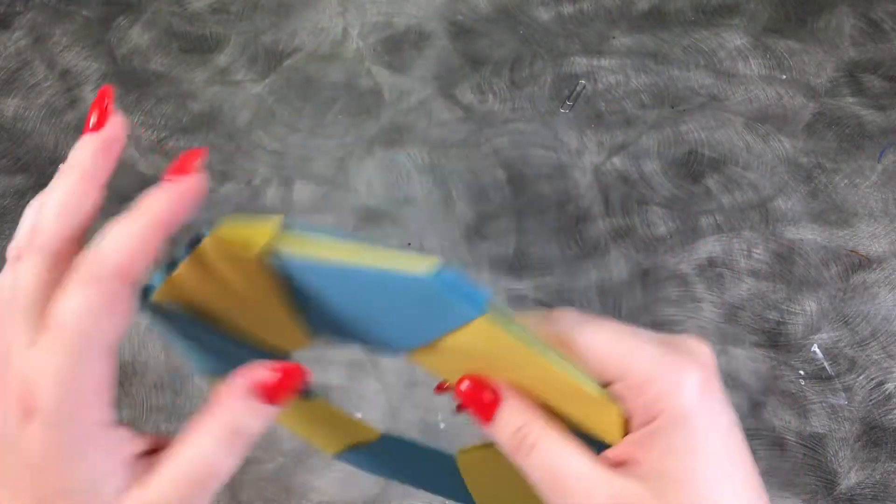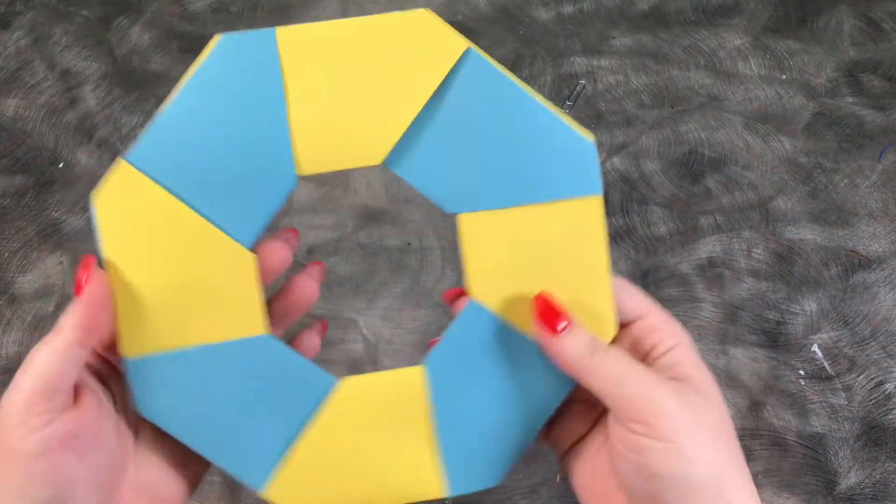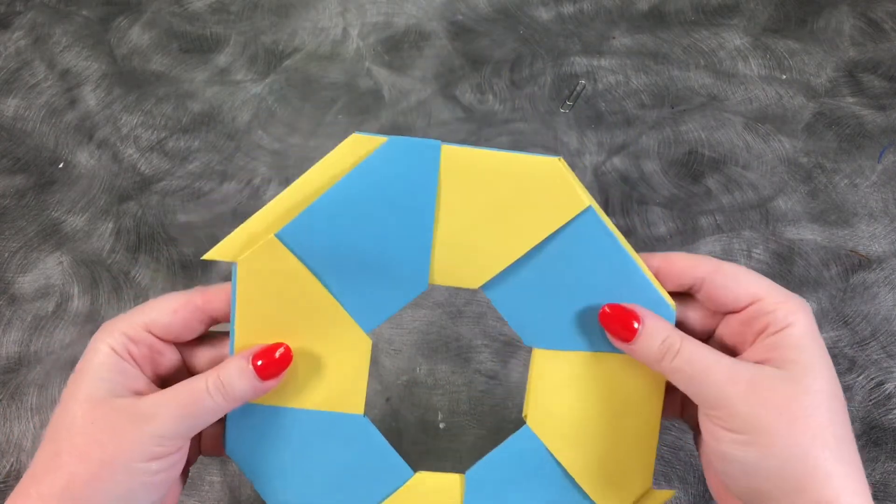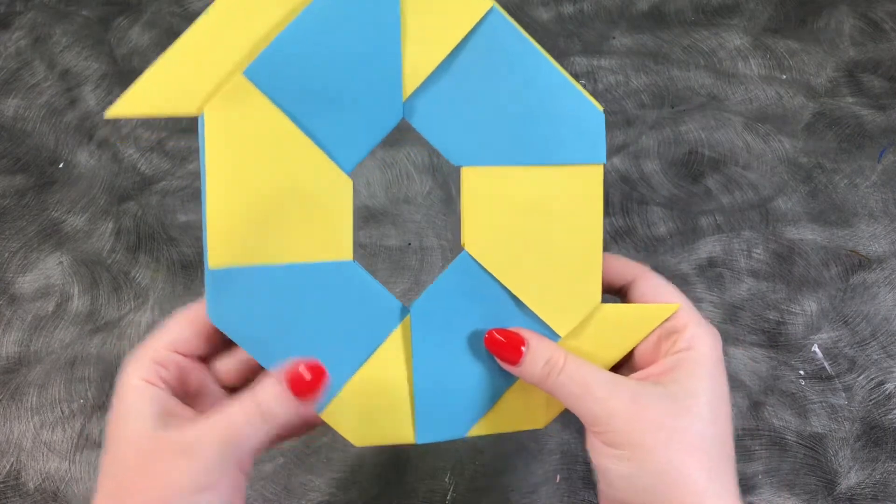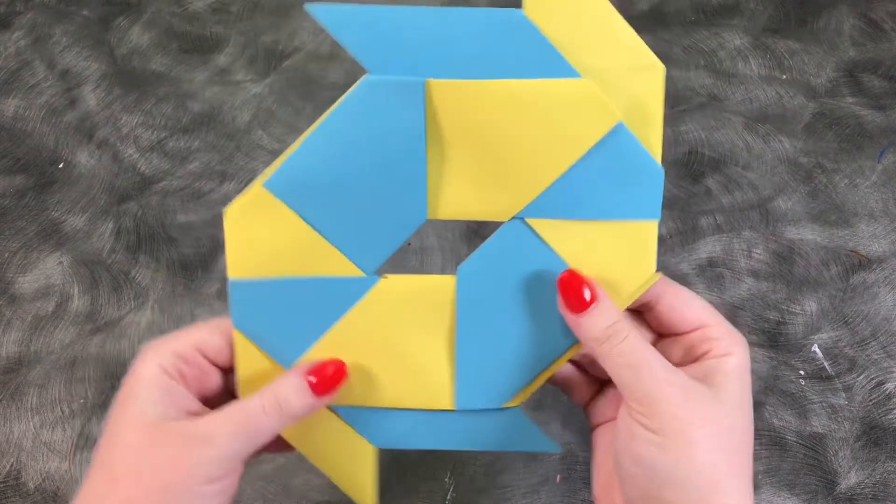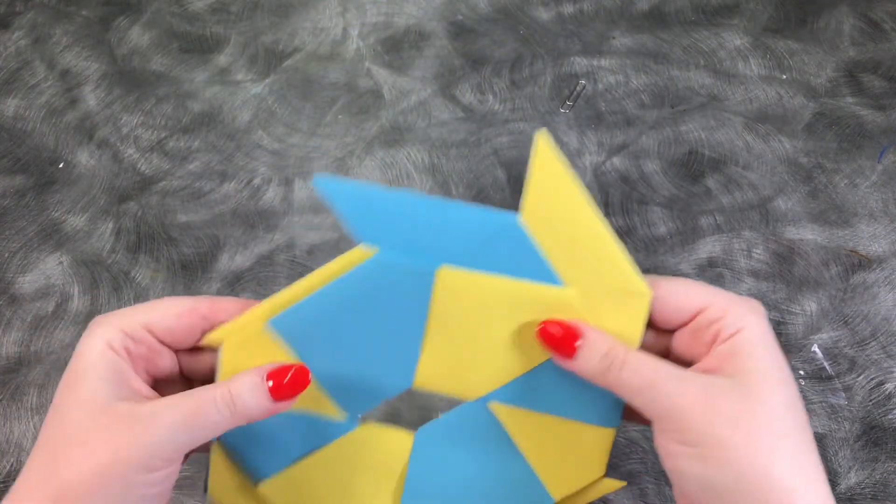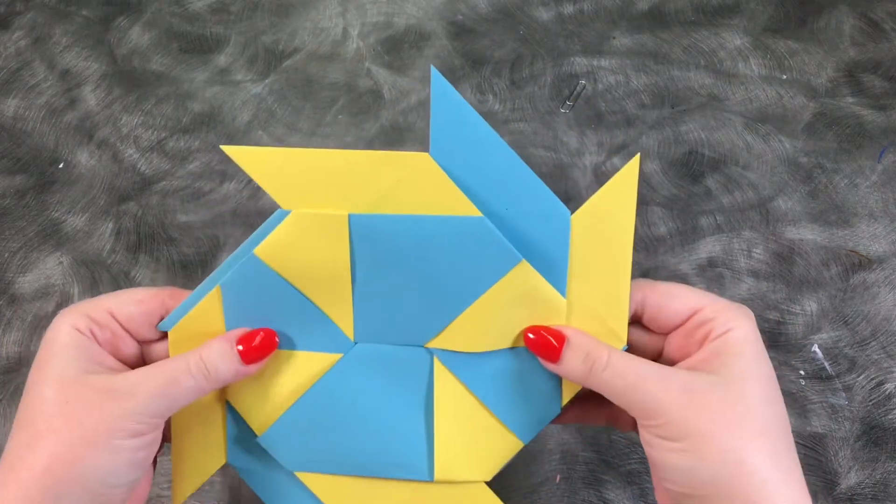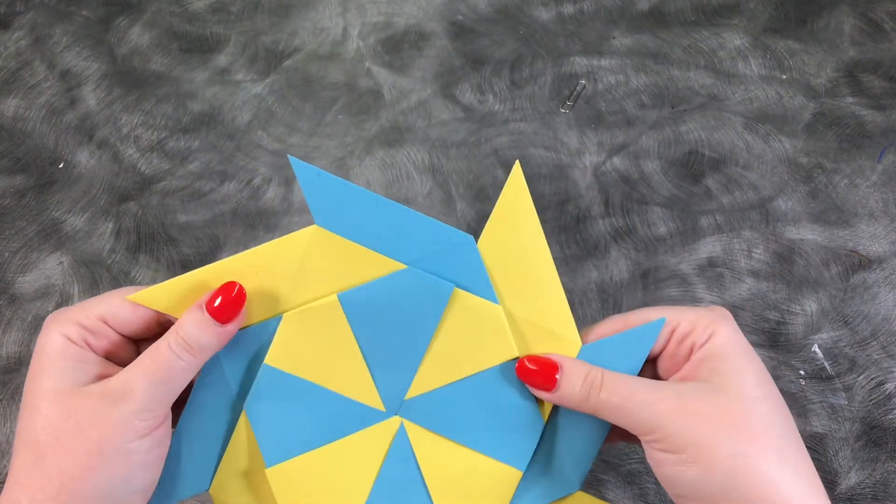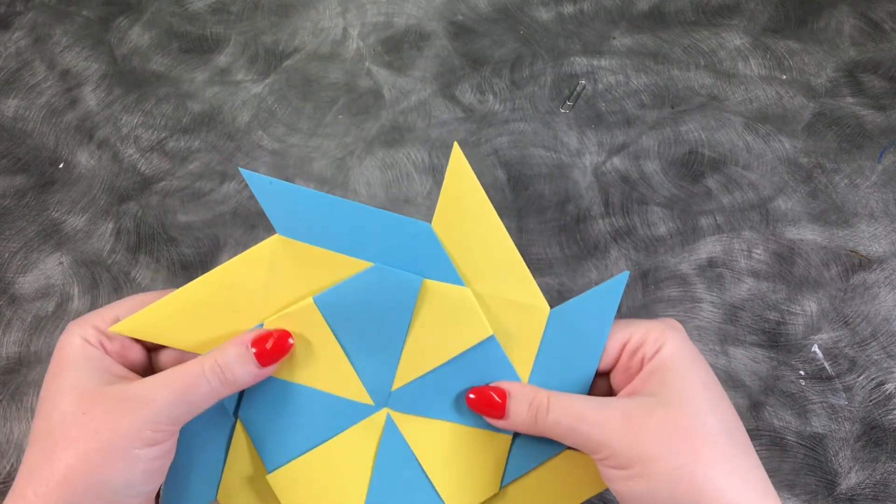Now you're probably thinking, well, what the heck? This is most certainly not a ninja star, but that's why it's a transforming ninja star. So very gently start pushing, pushing it in and continue very gently pushing it together. Don't force it, don't force it, just kind of gently push it. And voila, we have a really cool transforming ninja star.